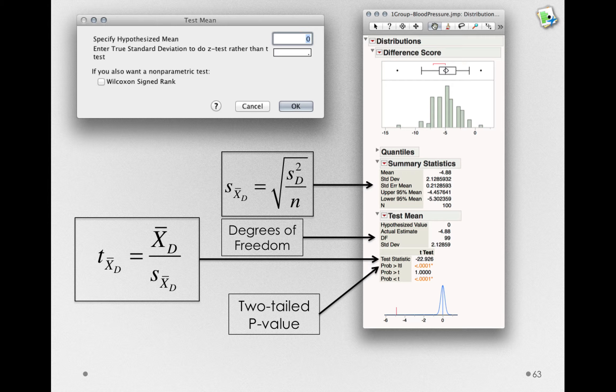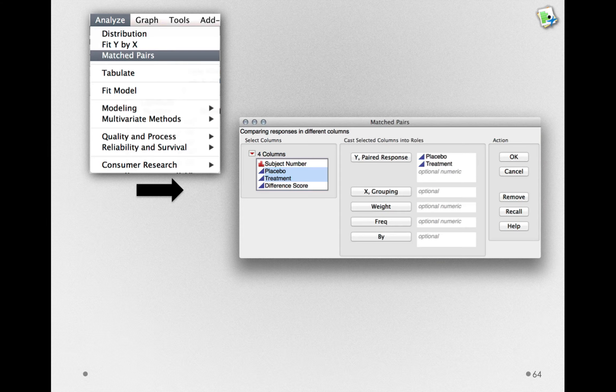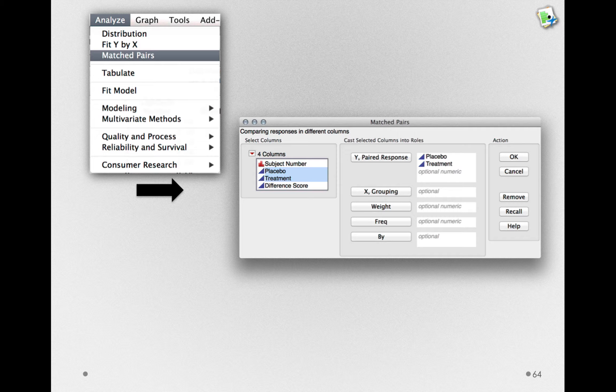Although I think it's useful to see how to do this hypothesis test by making the difference score column ourselves, JUMP has a faster way to work with these types of data. Instead of going to distribution, we can go to Analyze matched pairs.